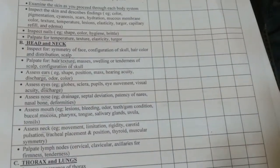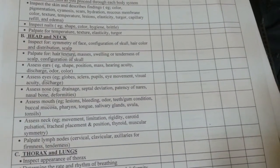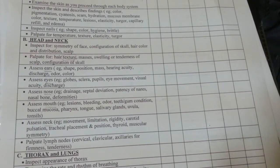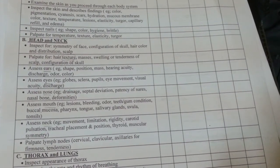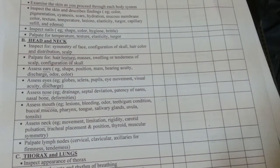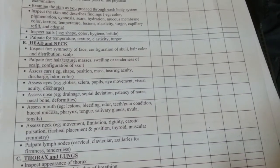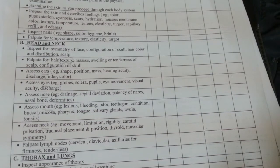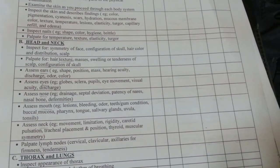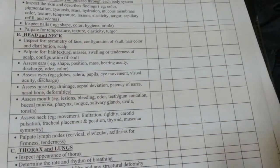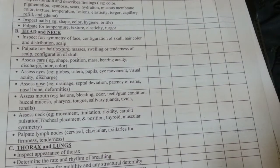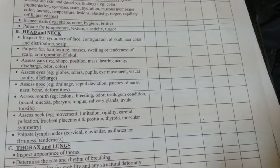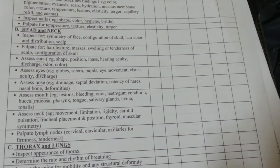For the head and neck, inspect for symmetry of the face, configuration of the skull, hair color and distribution, and the scalp. Palpate for hair texture, masses, swelling or tenderness of the scalp, and configuration of the skull. Assess the ears, noting shape, position, mass, hearing acuity, discharge, odor, and color.